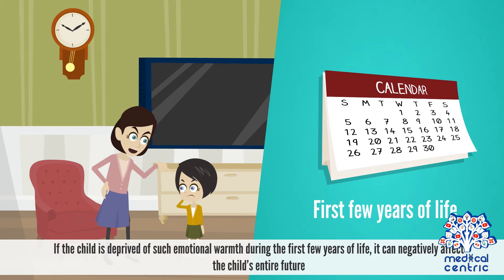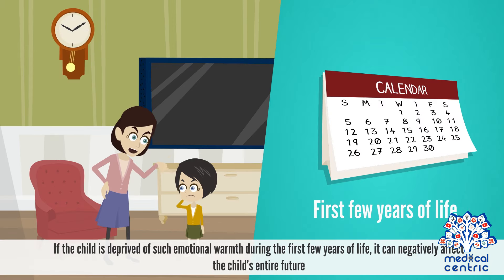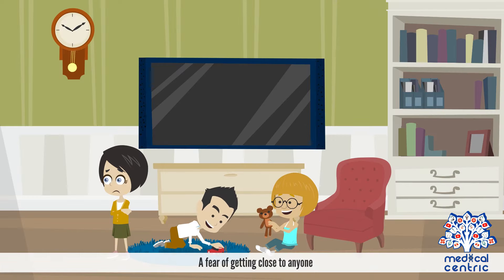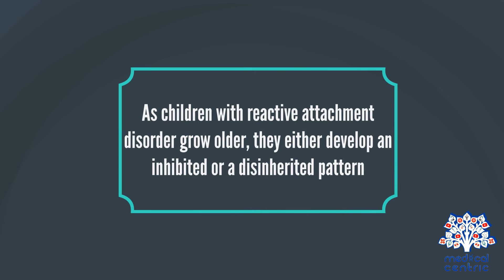If the child is deprived of such emotional warmth during the first few years of life, it can negatively affect the child's entire future. This can lead to difficulty connecting with their emotions, resulting in a lack of self-worth, a fear of getting close to anyone, and anger. As children with Reactive Attachment Disorder grow older, they either develop an inhibited or a disinhibited pattern.